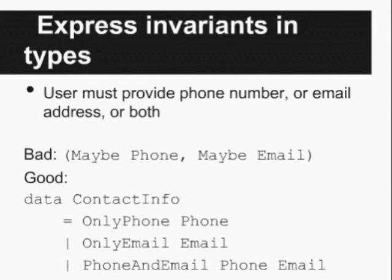Kevin asks: are there features of Haskell's type system you've tried and decided to avoid? The type class extensions can sometimes be dangerous. Overlapping instances, for example — there are definitely cases where it's tempting to use them, especially when defining instances for monad transformers where almost all act one way with one exception. But every time I've used overlapping instances I've regretted it, and I don't think I've touched them in the past three years.